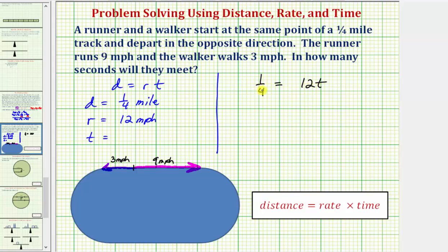But because we have a fraction here on the left, instead of dividing by 12, let's multiply by one-twelfth. So notice on the right side, this 12 is over one, so this simplifies nicely to t. So the time t in hours would be equal to one over 12 times four, one forty-eighth of an hour.